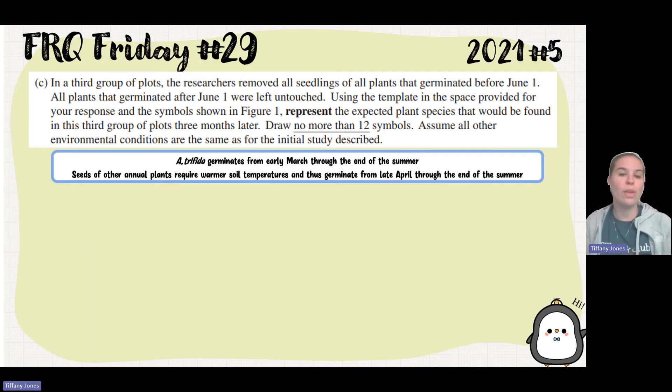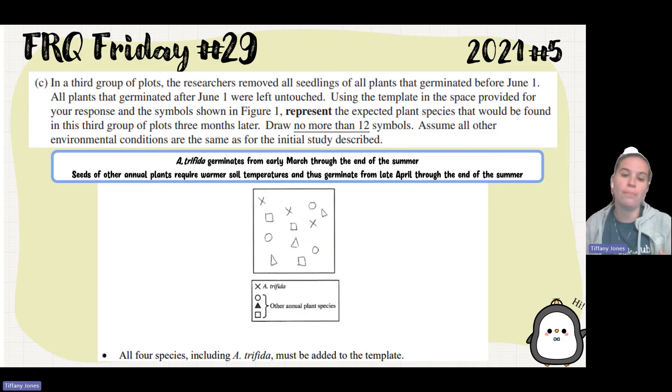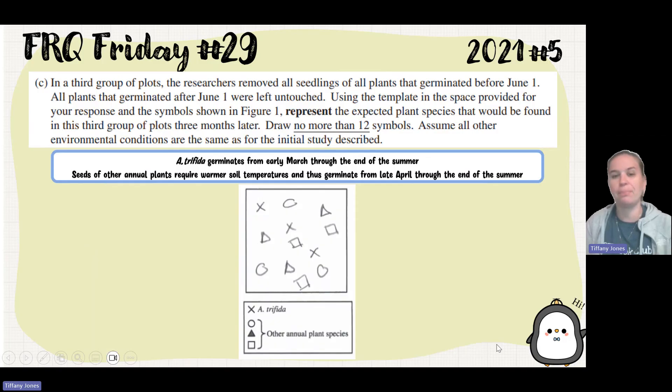Here I know that the A. trifida germinates from early March through the end of the summer, so it's still going to germinate after June 1st. And the seeds of the other annual plants require warmer soil temperatures and thus germinate from late April through the end of summer. Again, they will still be growing. So I would expect to see all four of these different species on my plot. I would put three of each of them, which would give me those 12 individuals that I was maxed out at. I should have all four species on my template. The student did that. They put all four of them on there and maxed out at only 12.